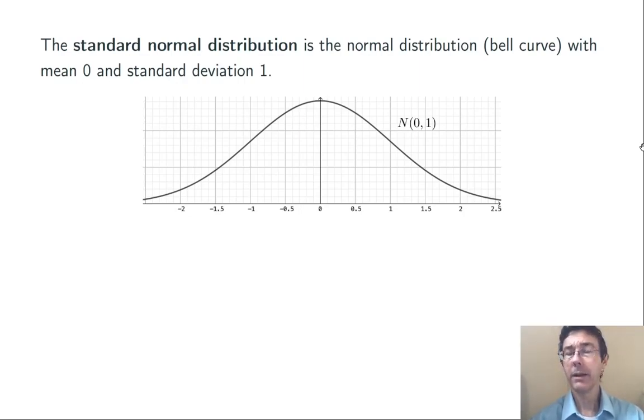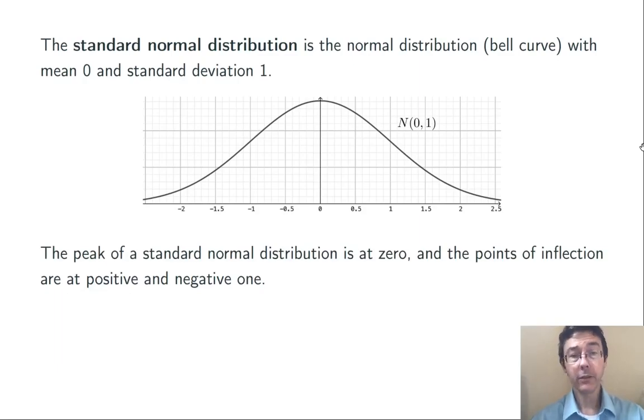Here we're talking about a continuous random variable that can take values between negative infinity and positive infinity, but the bulk of the probability is clustered near 0. The peak is at the center, at the mean at 0, and the standard deviation of 1 means that the points of inflection of this graph, where it changes from being hill-shaped to valley-shaped, are going to be at plus and minus 1.